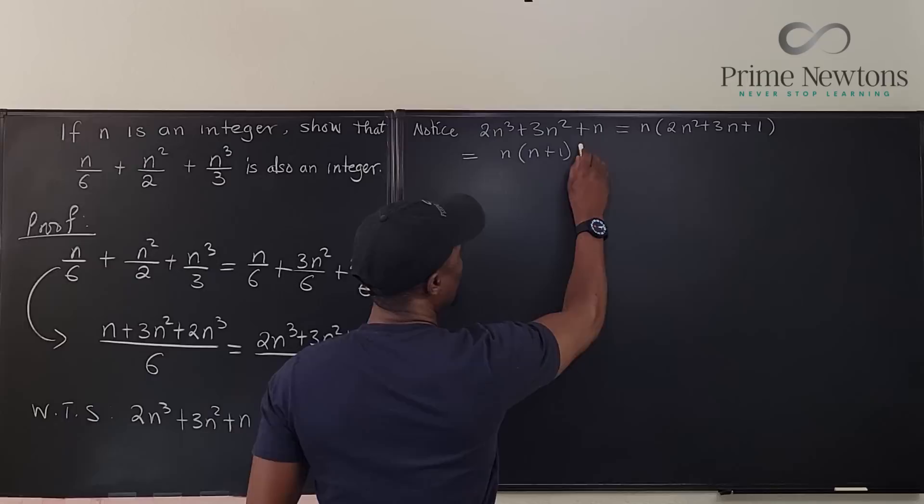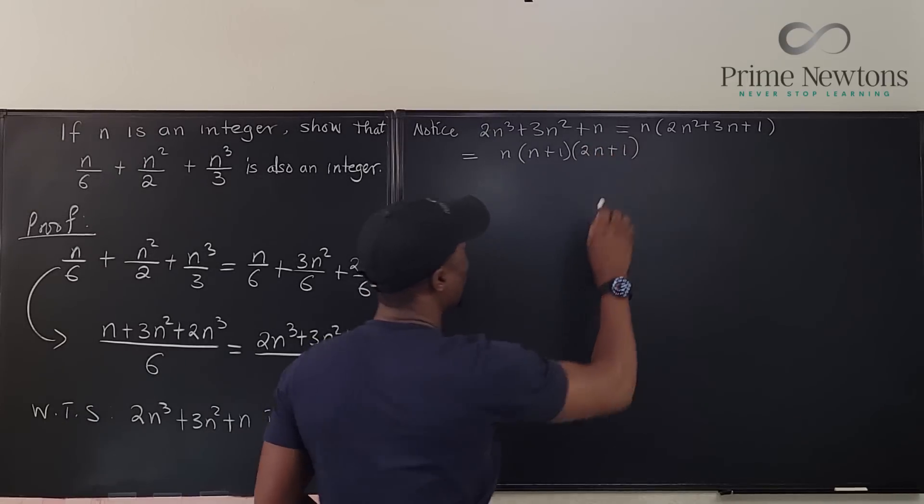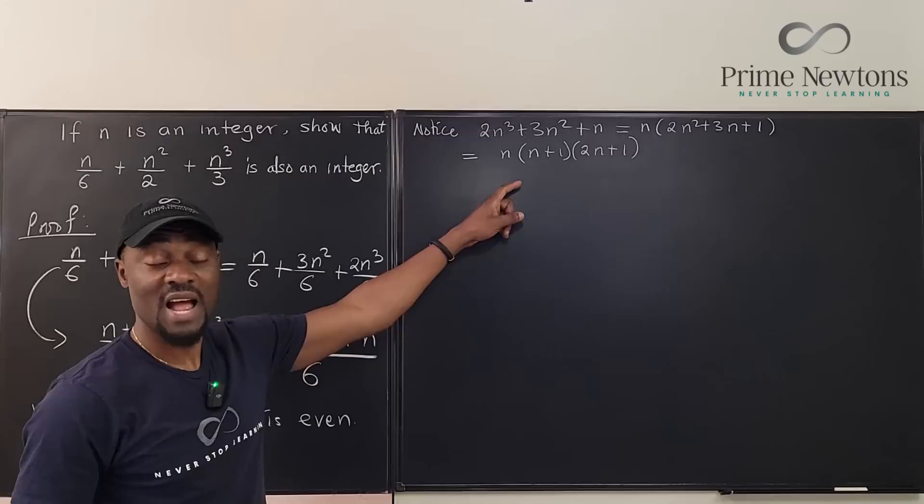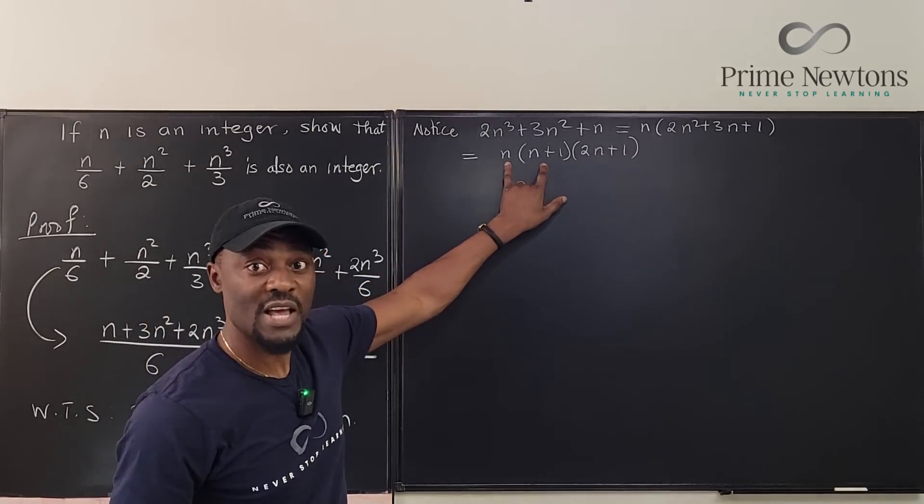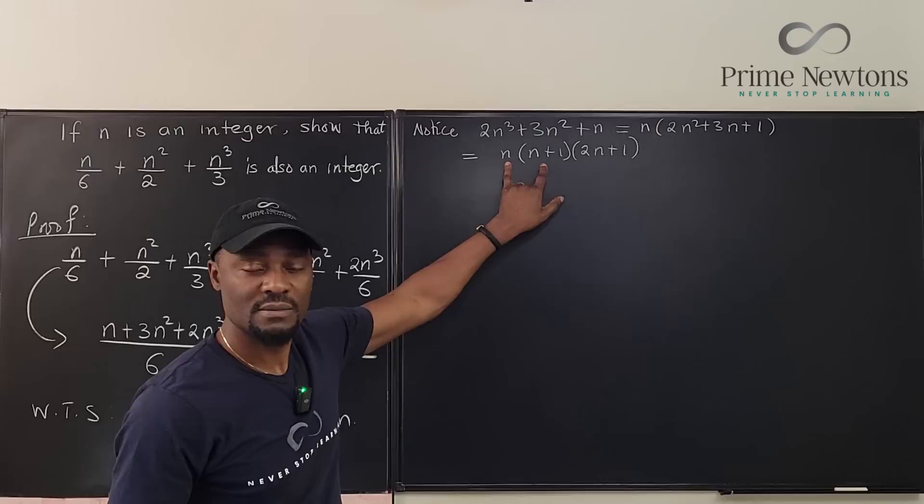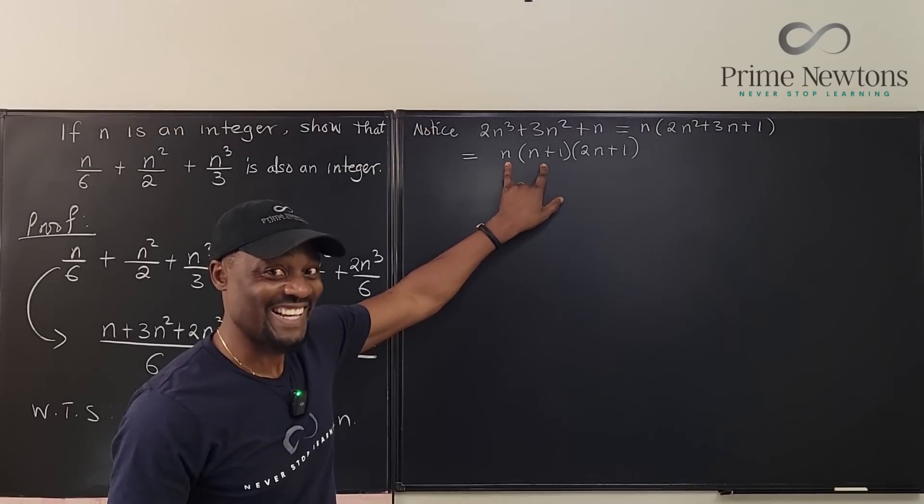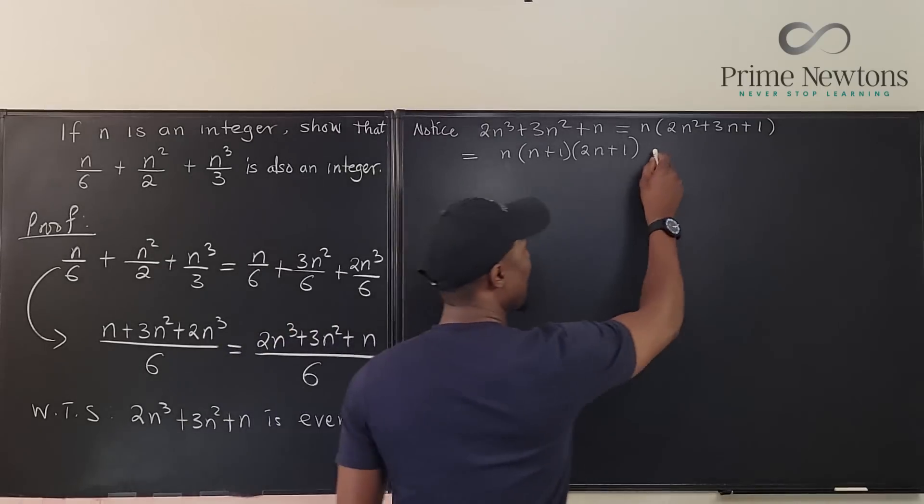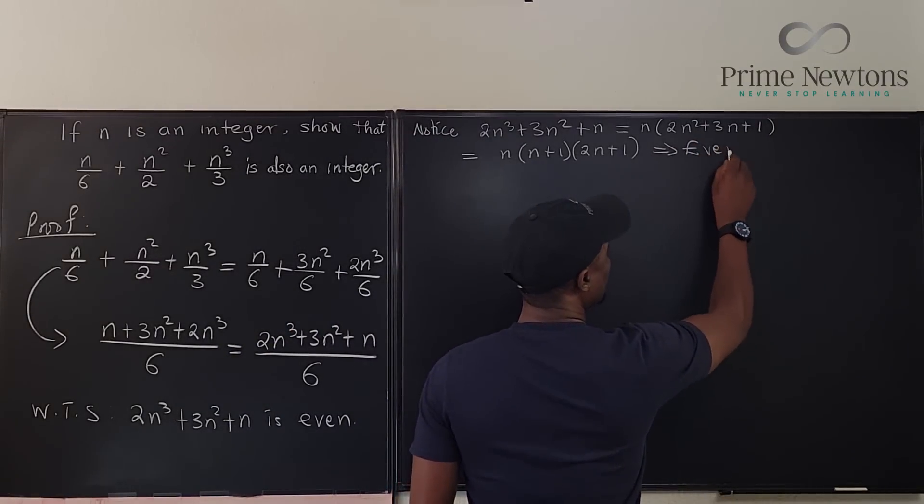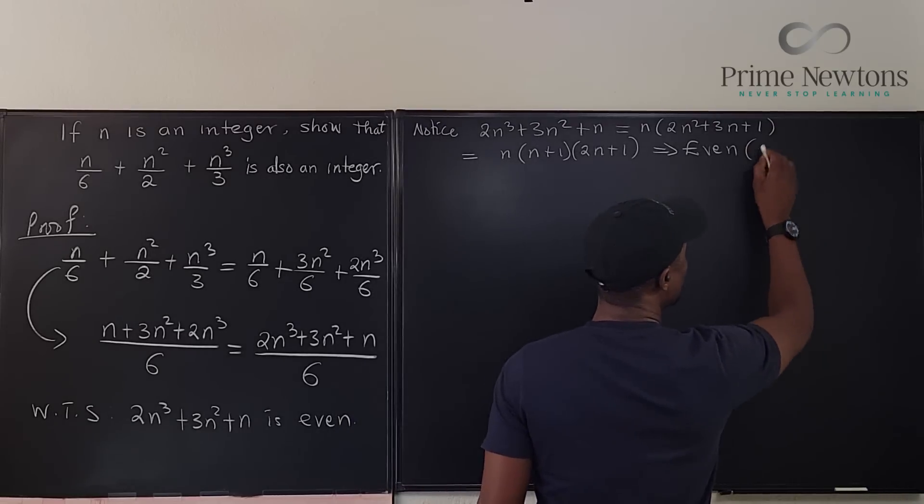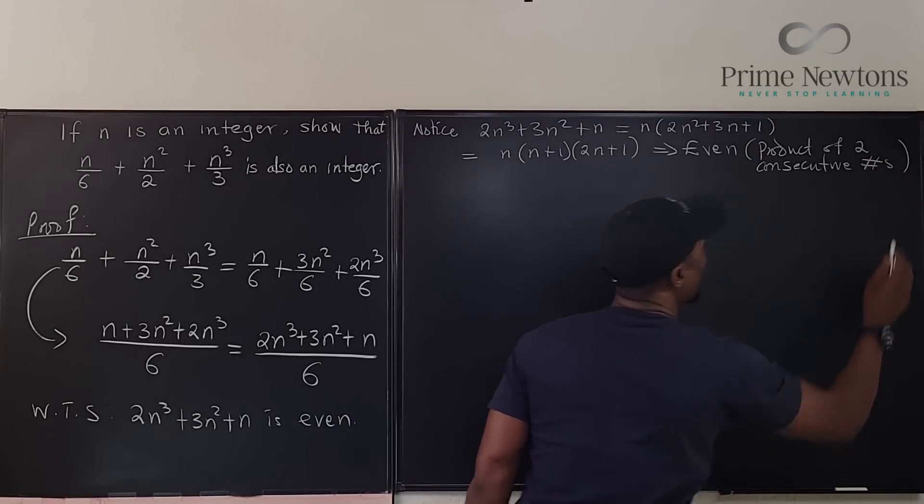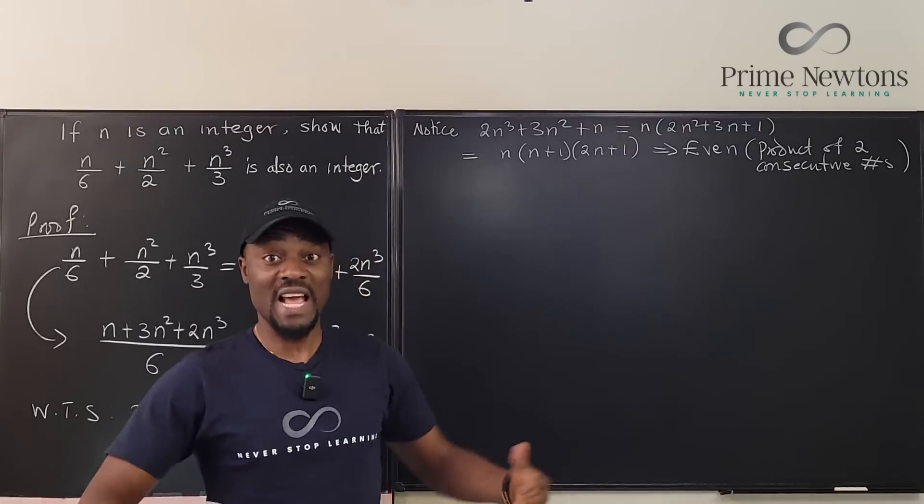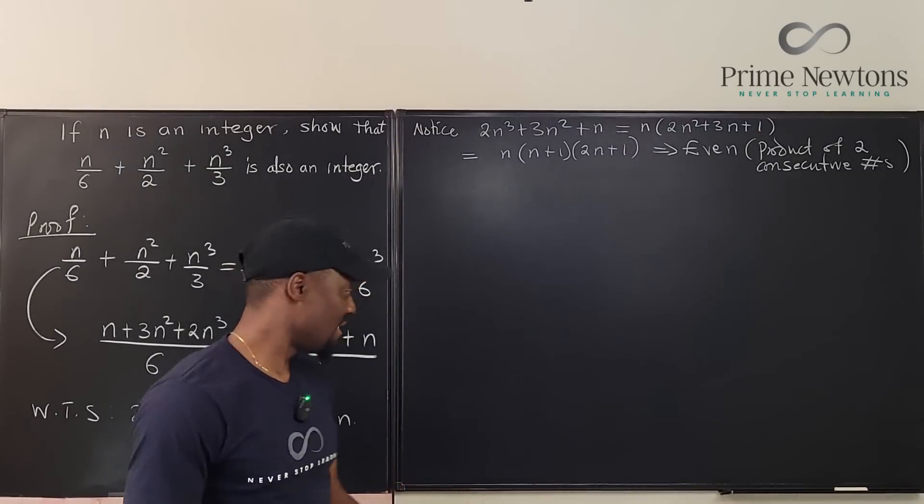Clearly I know it's even. How do I know? Because the product of two consecutive numbers is always even. The product of two consecutive numbers is always even, so this implies even. Because of that, I got two consecutive numbers here, I know this number is even.